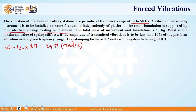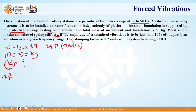The total mass of the instrument and foundation is found to be 50 kg. We need to find the maximum spring stiffness K such that the amplitude of transmitted vibration is less than 10% of the platform vibrations over the given frequency range. So the displacement transmissibility ratio x/y must be less than 0.1; we assume it equals 0.1. The damping factor zeta is 0.2 and the system is single degree of freedom.